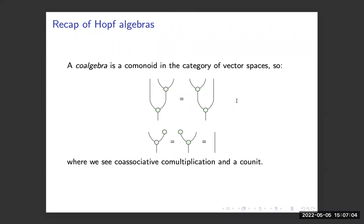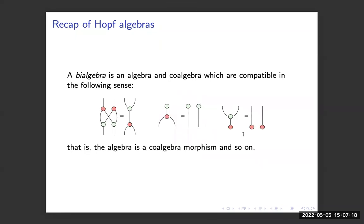A coalgebra is just a flipped version of this — I've also changed the color for clarity. So we have a coassociative comultiplication on the top and then a counit on the bottom. A bialgebra combines an algebra and a coalgebra which are interacting, in the sense that the algebra is a coalgebra map and vice versa, and the units and counits are also comultiplication and multiplication maps respectively.